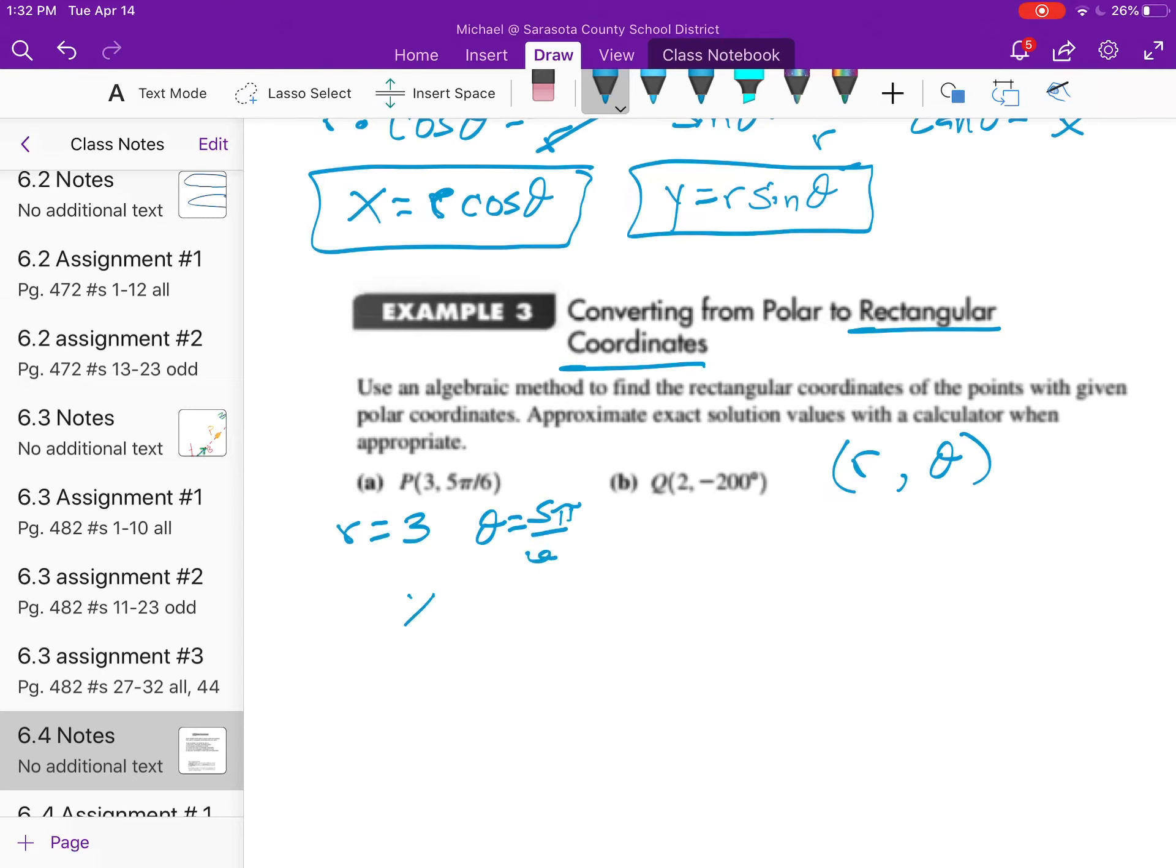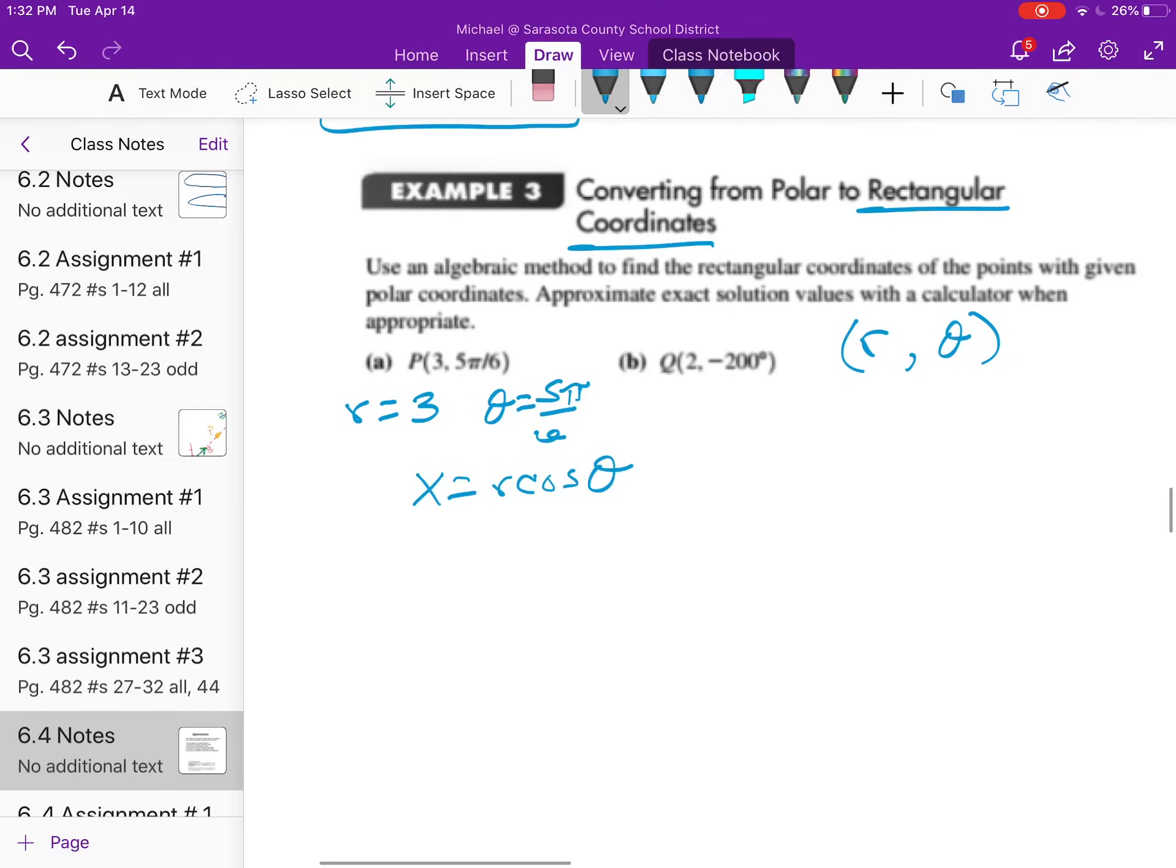I know that x equals the radius times the cosine of theta. Let's substitute right in. We get 3 times the cosine of 5π over 6. Because this is asking for rectangular coordinates, we actually have to do the math to get the trig stuff out of the way. Those are the polar sides of things. We want just the x and y.